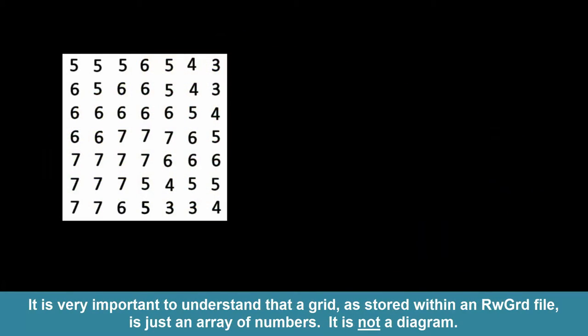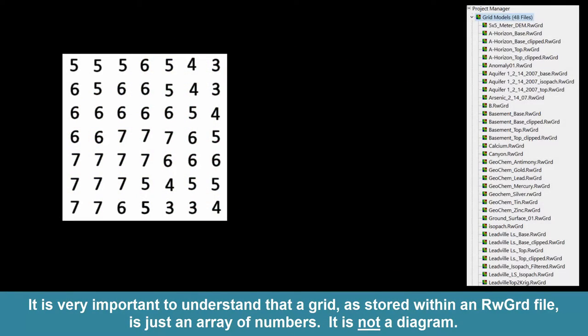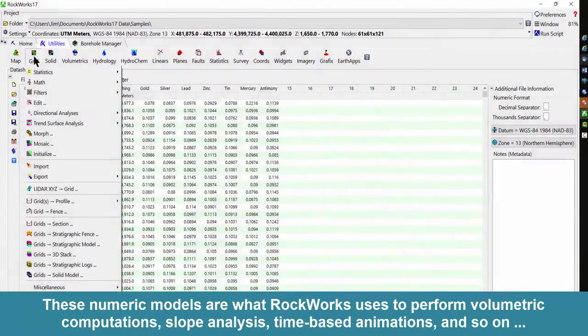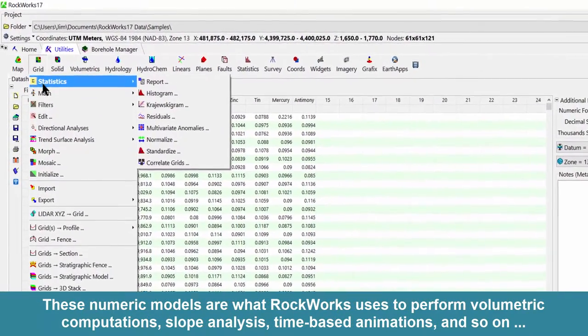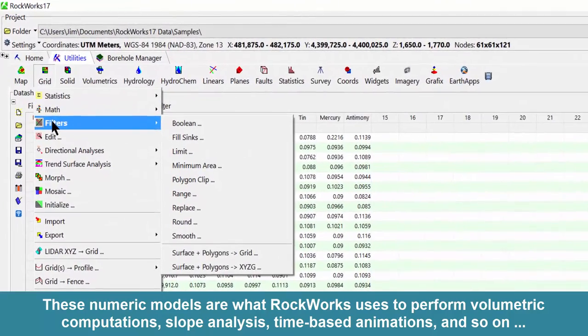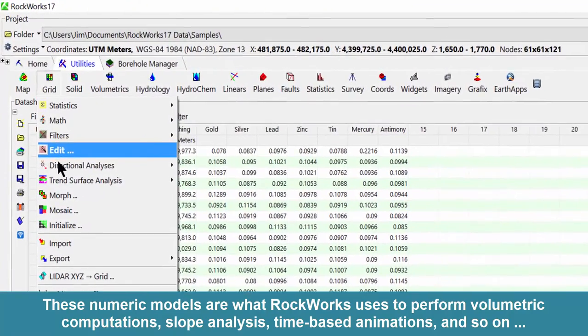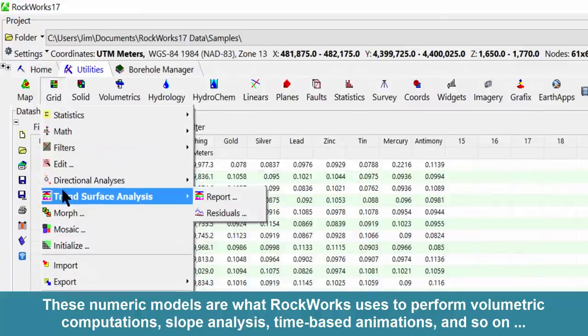It is very important to understand that a grid, as stored within an rwgrd file, is just an array of numbers. It is not a diagram. These numeric models are what Rockworks uses to perform volumetric computations, slope analysis, time-based animations, and so on.